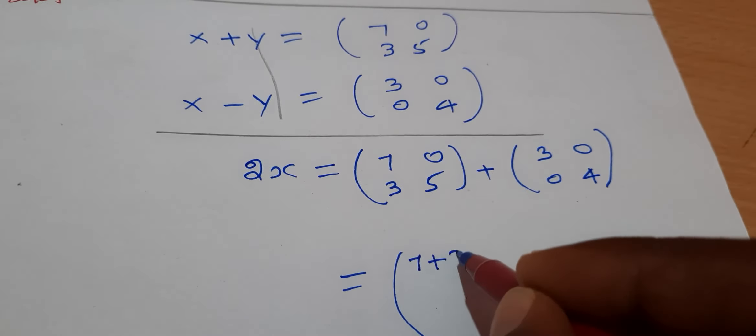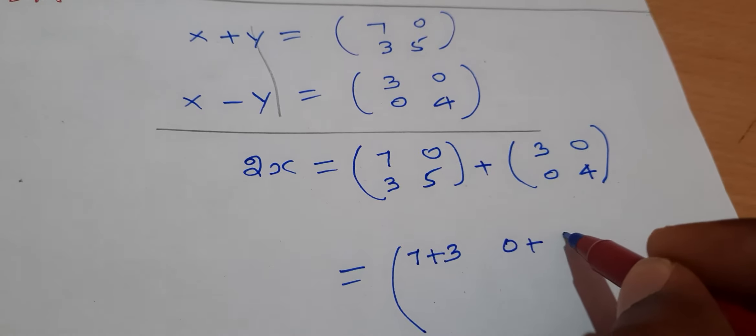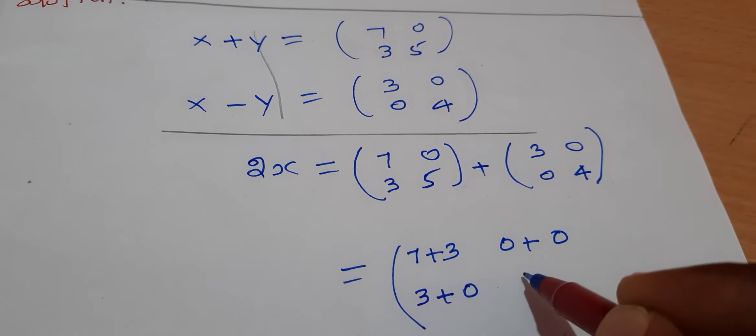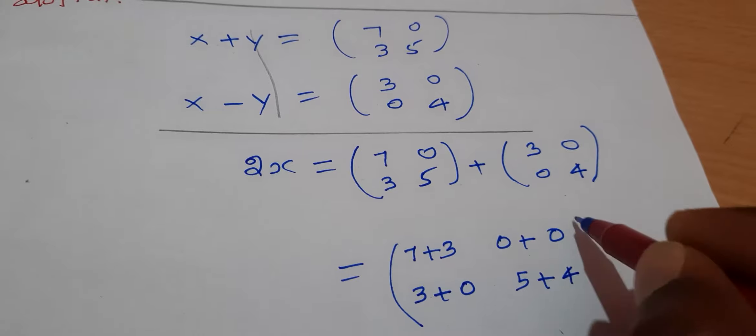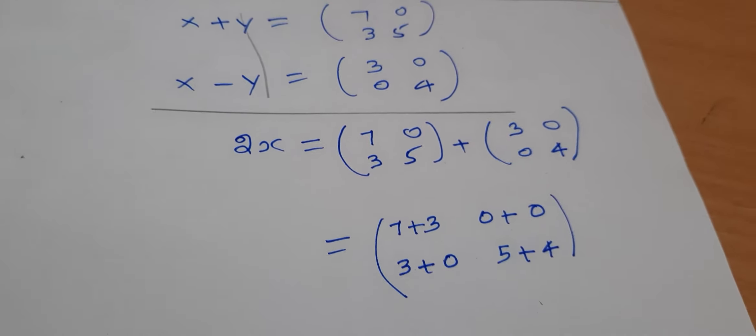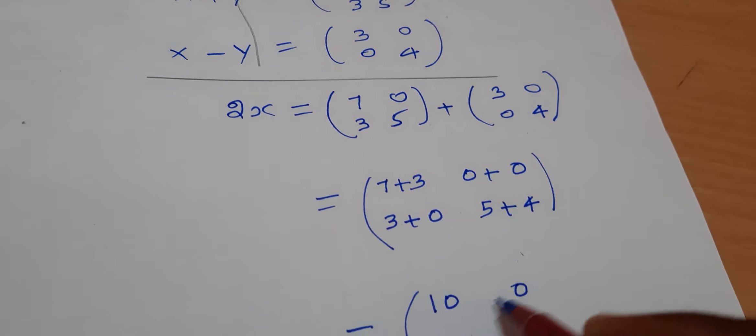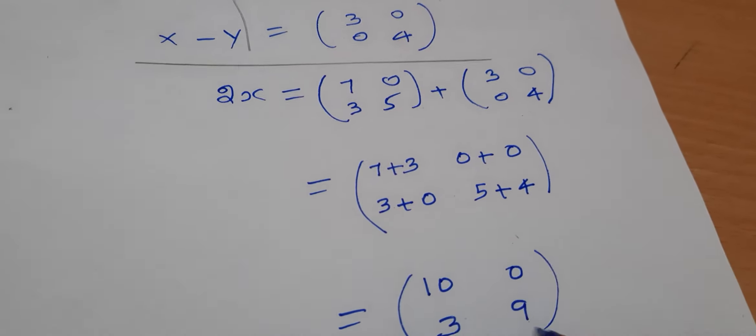7 plus 3, 0 plus 0, 3 plus 0, 5 plus 4. What do we get? 7 plus 3 is 10, 0, 3, and 9.